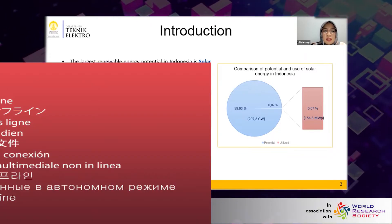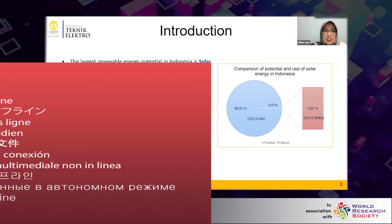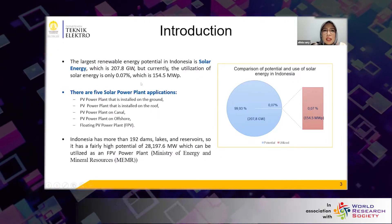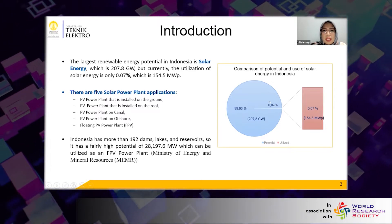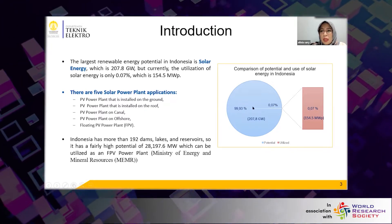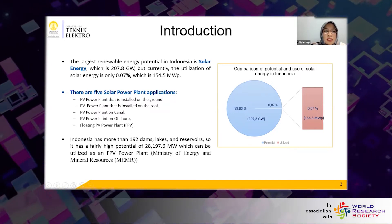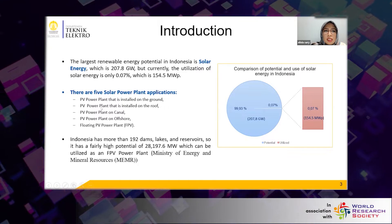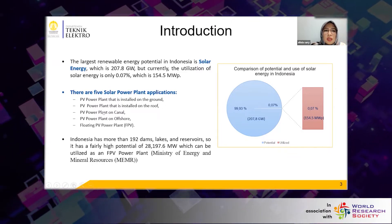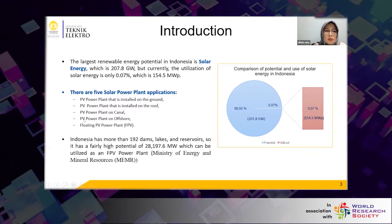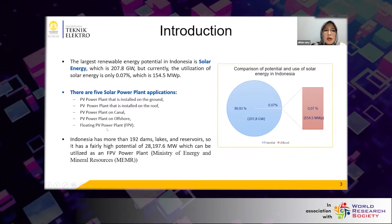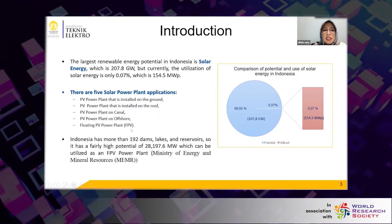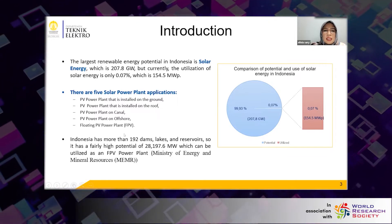Indonesia is a tropical country, so the renewable energy potential in Indonesia for solar energy is 207.8 gigawatt. But currently the utilization of solar energy is only 0.07%, which is 154.5 megawatt. In line with the current development of technology, there are five solar power plant applications: PV power plant on the ground, rooftop PV, PV over canal, offshore PV, and floating PV power plant or FPV. Indonesia has more than 192 dams, lakes, and reservoirs, giving it fairly high potential which can be utilized as a PV power plant.